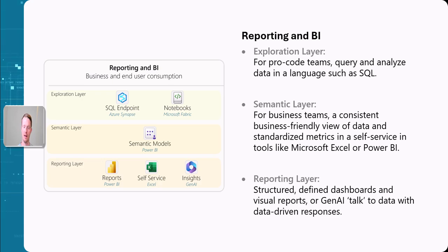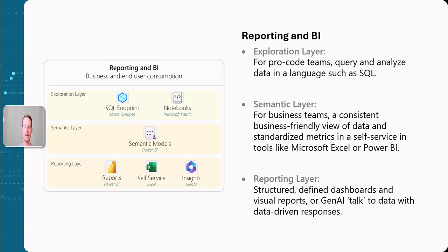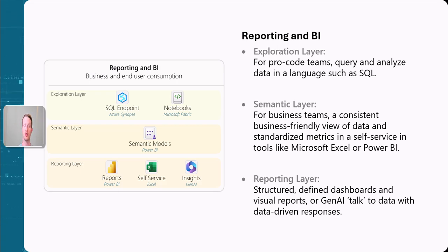Next we have the semantic layer. This allows users to access the data in an ad hoc and self-service way, but is more business focused — for example, finance teams who want to run some ad hoc numbers can connect through the semantic layer. It allows self-service in tools like Microsoft Excel or Power BI. Finally, you have the reporting layer: structured and defined dashboards and reports such as Power BI reports or pre-built Excel reports. You also now have a lot going on with generative AI and insights, allowing business users to type natural language questions and get visuals and responses.